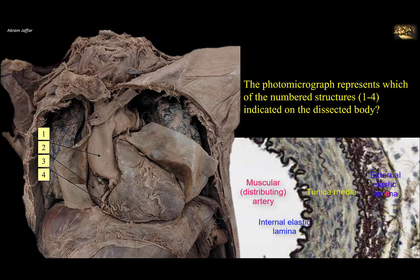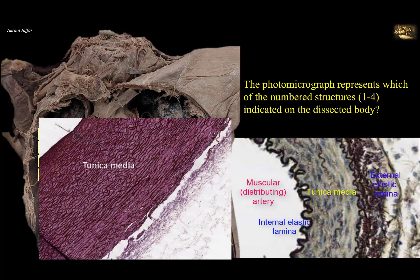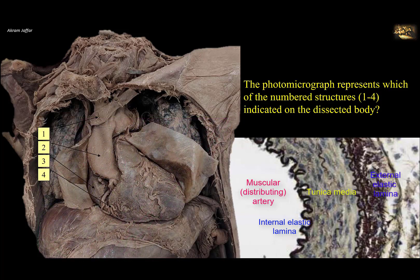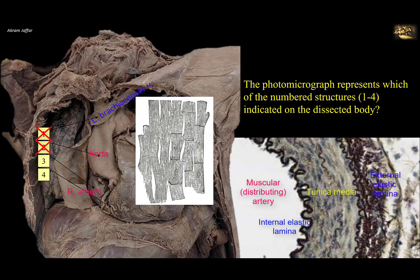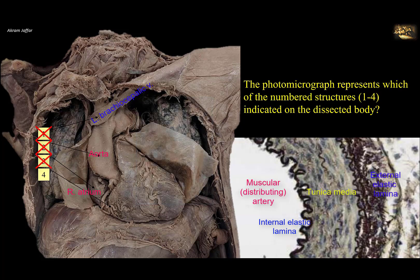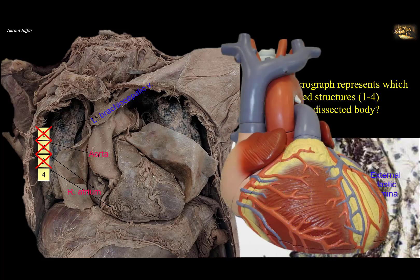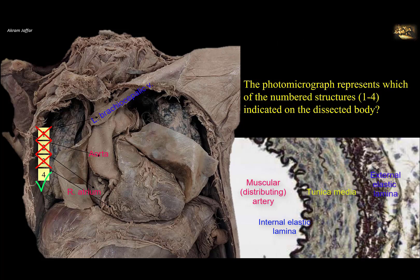It is not an elastic conducting artery. In an elastic conducting artery, the entire tunica media is formed of multiple laminae of elastic fibers, so you cannot distinguish an external and internal elastic lamina, because the elastic laminae are continuous throughout the thickness of the tunica media. Structure 1, the left brachiocephalic vein, is a vein and doesn't match the histology. Structure 2, the aorta, is an elastic artery and also does not match. Structure 3, the right atrium, contains cardiac muscle fibers that are striated, branched, and have intercalated discs — not smooth muscle. Structure 4, a ventricular branch of the right coronary artery, is a muscular distributing artery that matches the given histology.